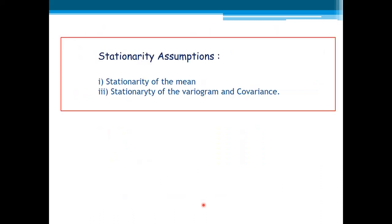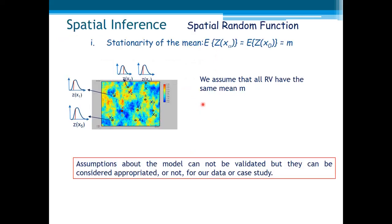So let us see in detail the two stationarity assumptions: stationarity of the mean, and stationarity of the variogram and covariance. Stationarity of the mean can be written as: the expectation of z(x_α) is equal to a constant. We assume that all random variables have the same mean, the same expectation. It is important to note that assumptions about the model cannot be validated, but they can be considered appropriate or not for our data or case study.